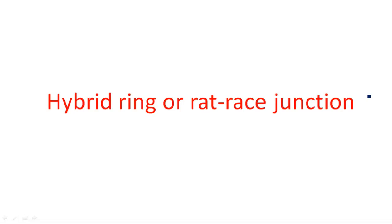In this video I am going to explain about hybrid ring or rat race junction. The hybrid ring or rat race junction is the fourth type of T-junction. In previous videos I explained the E-plane T-junction as the first one, H-plane T-junction as the second, E-plane T-junction as the third, and magic T which is a combination of both E-plane and H-plane, also known as hybrid T-junction. In this video I am going to explain the last type: the hybrid ring or rat race junction.